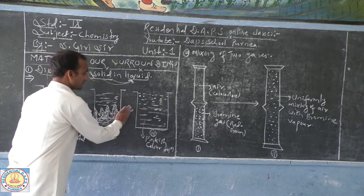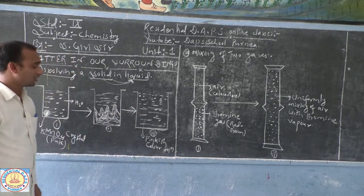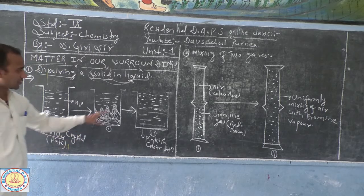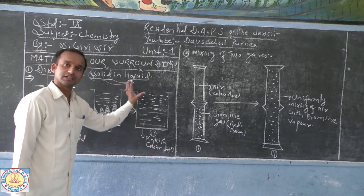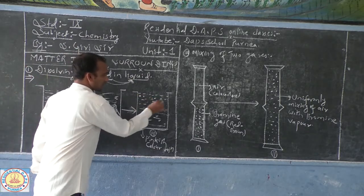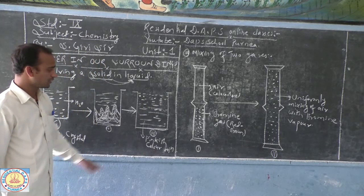After a few minutes again, we will get the complete potassium permanganate crystals uniformly dissolved in water. Purple color or the pinkish water color of solution will be visible.